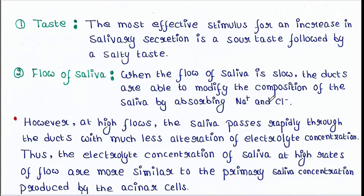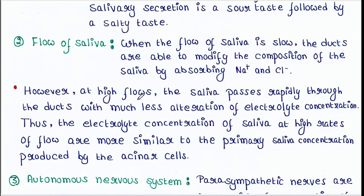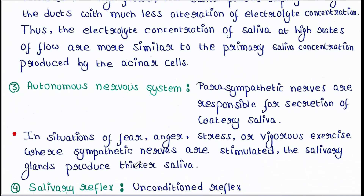Regarding flow: when the flow of saliva is slow, the ducts are able to modify the composition by absorbing sodium and chloride ions. However, at high flows, saliva passes rapidly through the ducts with much less alteration of electrolyte concentration. Thus, the electrolyte concentration of saliva at high flow rates is more similar to the primary saliva produced by the acinar cells.